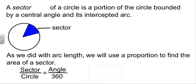just like we had before, the angle over 360. The angle being the central angle of the sector. Or in symbols, A over pi R squared equals X over 360.